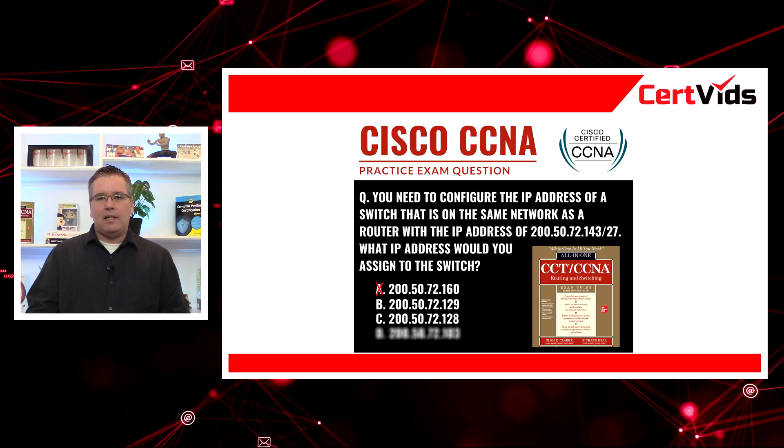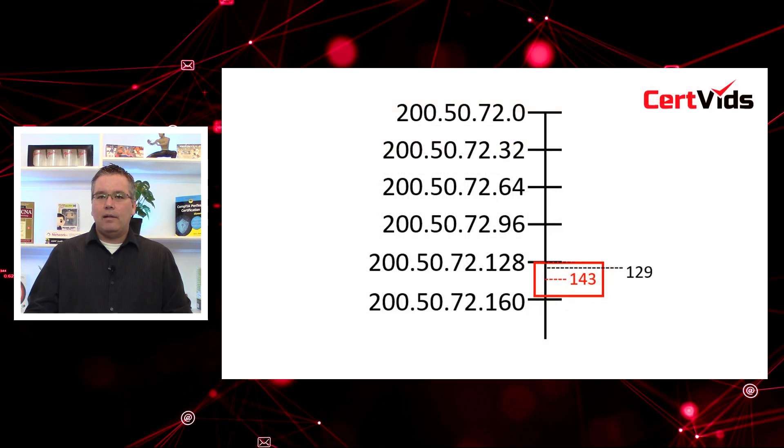Choice C is 128. Again, that's in the same network block. But because it's the actual first value within the network block, it's actually reserved for the network ID. So although it's in the correct network block, you're not allowed to assign it to a system on the network because it's already reserved for the network ID. So choice C is not an answer.